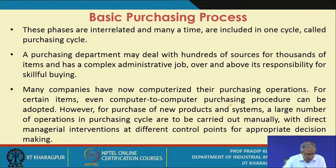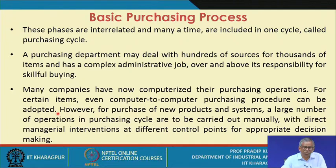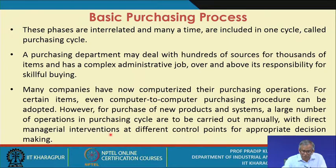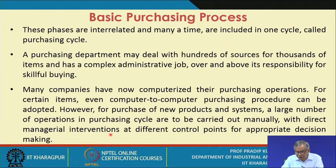Many companies have now computerized their purchasing operations, which is a very common occurrence. For certain standard items, computer-to-computer purchasing procedures can be adopted where the supplier base remains constant. However, for purchase of new products and systems like system subcontracting, a large number of operations in the purchasing cycle must be carried out manually. This is unavoidable, with direct managerial interventions at different control points. The purchasing cycle may be represented with respect to a number of control points at which appropriate decisions are made.